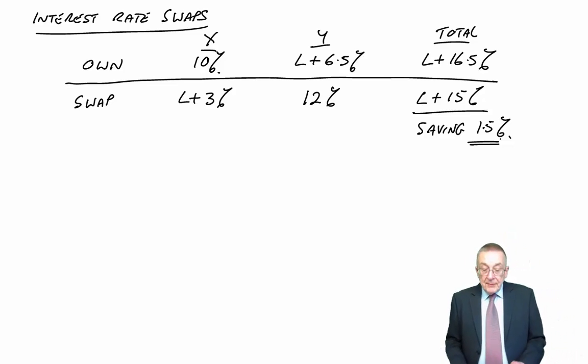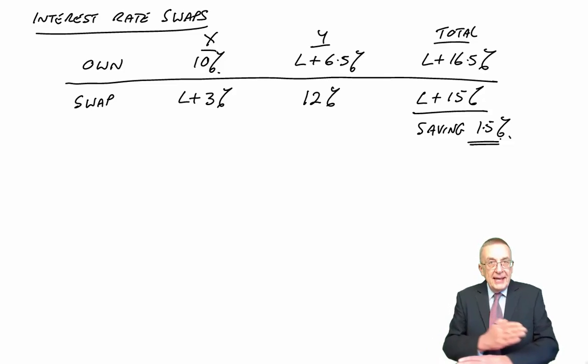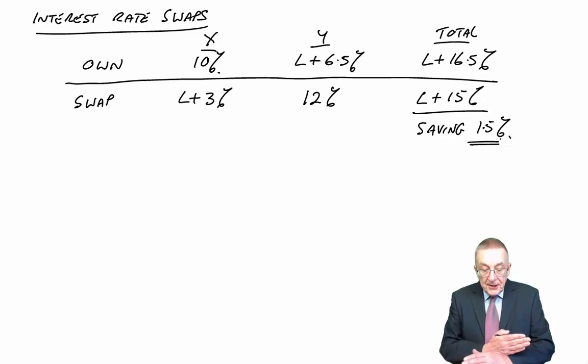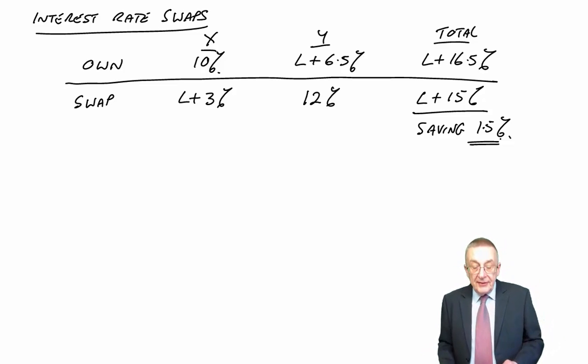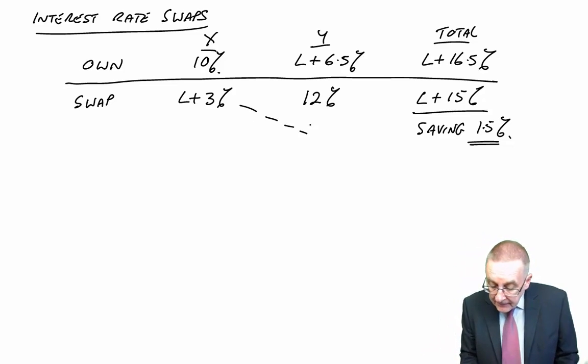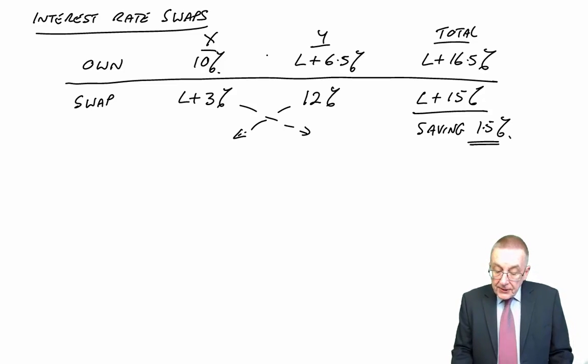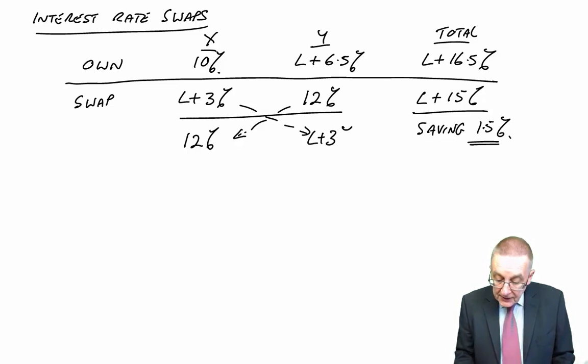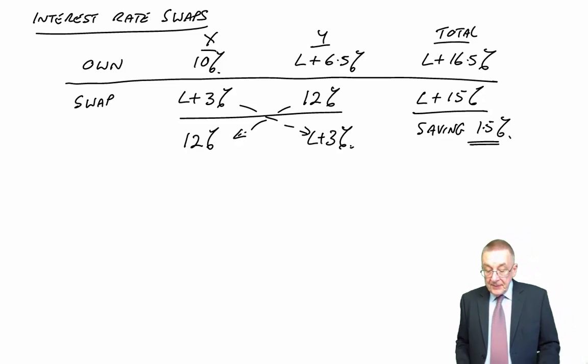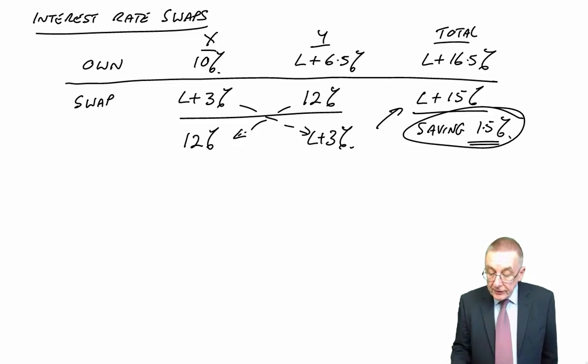And what they could do is simply borrow the opposite of what they need, which is what I've written down, but then effectively pay each other's interest. So X negotiates the loan at floating, Y arranges the loan at fixed, but then they pay each other's interest. So X ends up paying 12%, Y ends up paying LIBOR plus 3%. And again, because in total they're paying LIBOR plus 15, they've saved 1.5%.